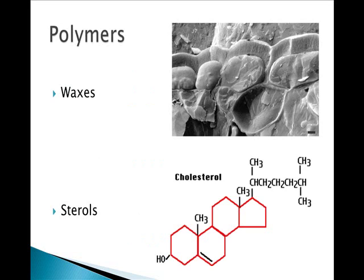Some of the polymers for lipids include waxes and sterols. Waxes are used as a protective coating over plants and help to reduce water loss. Sterols, including cholesterol, help to function in liquidity of different structures — cholesterol helps with the liquidity of different molecules in the cell membrane.